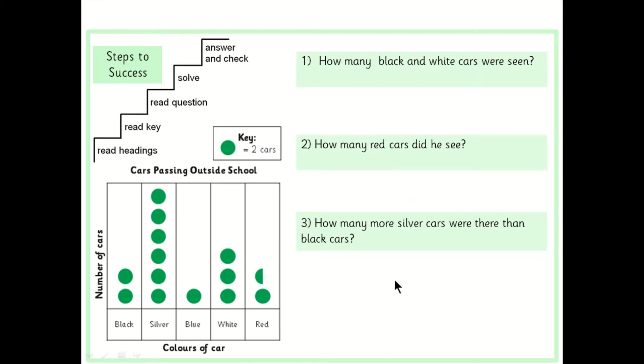Okay let's have a look at some of the questions that you might see when you're looking at statistics. So for our pictogram today question one how many black and white cars were seen. So simply we need to see how many black cars were seen how many white cars were seen and add them together.